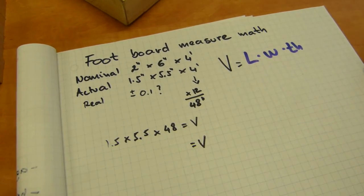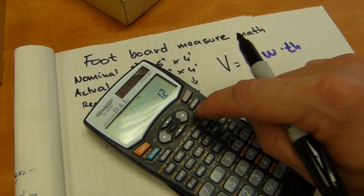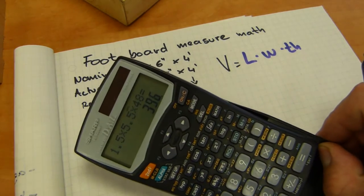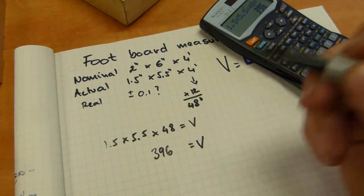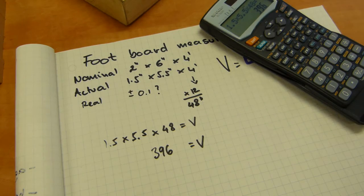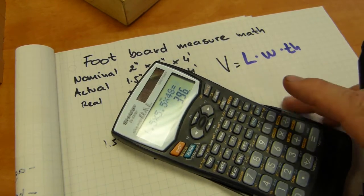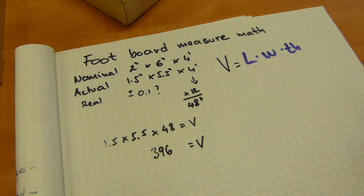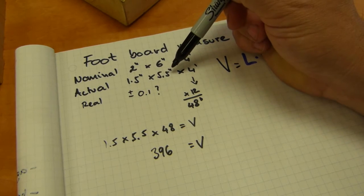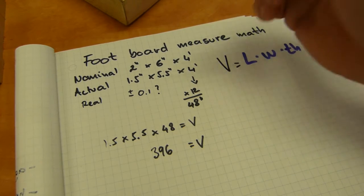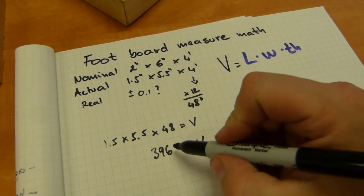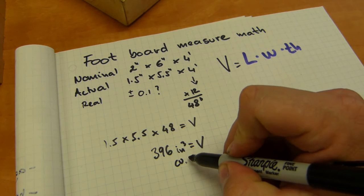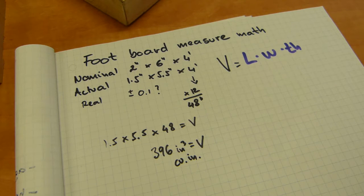If you do the math, volume equals 1.5 times 5.5 times 48 equals 396. Now, my question is, 396 what? Because the calculator does the calculation for you but doesn't do the thinking. 396 what? If you look at the units of measure, inches were multiplied with inches were multiplied with inches. So, inches times inches times inches equals cubic inches. So that's your unit of measurement. Sometimes it's written C-U-I-N cubic inches. Same thing.